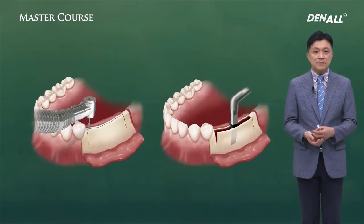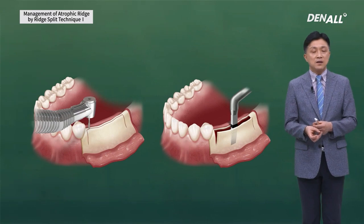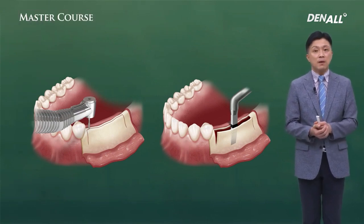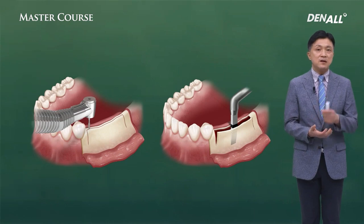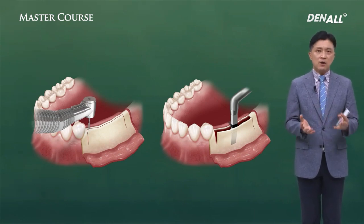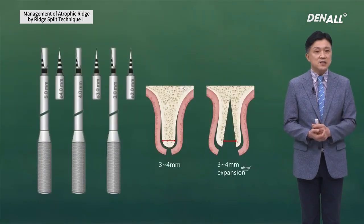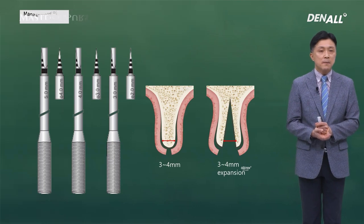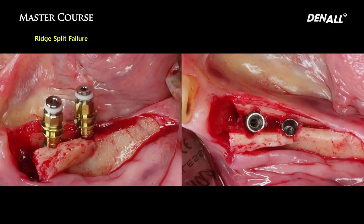In the past, high-speed burrs and other tools were used for ridge split osteotomy — melding or chisels to widen it. The problem was that vertical osteotomy was imperative, requiring vertical releasing incisions, which expanded the surgical field and increased patient discomfort. Ridge splitting osteotomy was used frequently but is associated with many problems. If the split is not done properly or the indication is wrong, complications can occur.